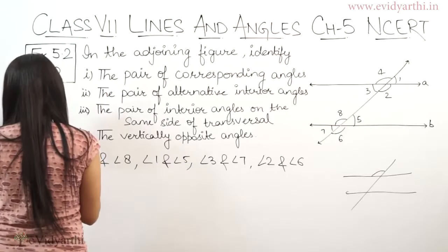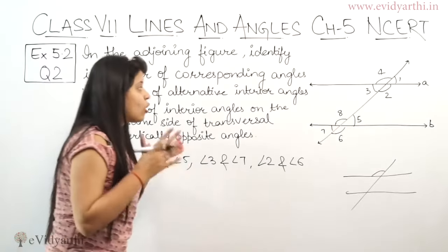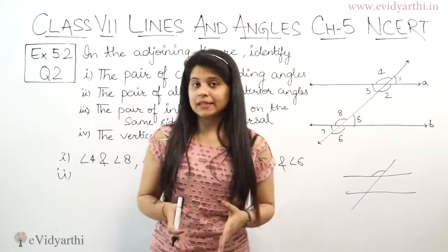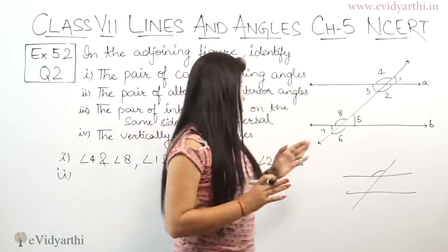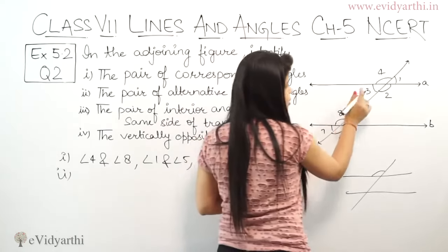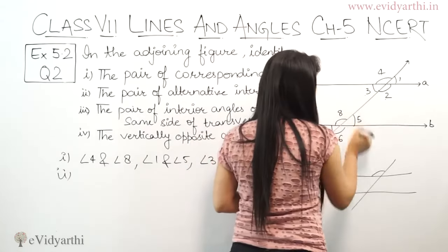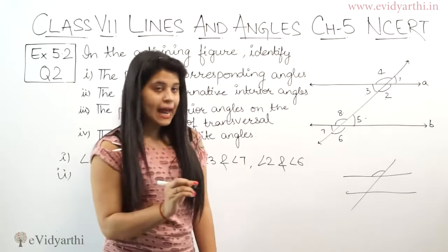Coming to second part. In the second part you need to identify the pair of alternative interior angles. Which are the alternative interior angles in this? First, interior means the angles inside. Which are the inside angles? 3, 2, 8, 5. All these four are interior angles.